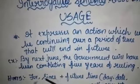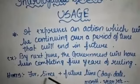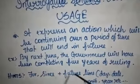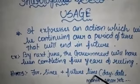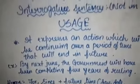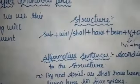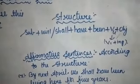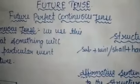Here are some key hints to identify this tense: 'for,' 'since,' 'since' plus a future time — day, date, month, year, etc. These are the hints to identify future perfect continuous tense. The structure is: Subject + will or shall + have + been + verb + object. Thank you.